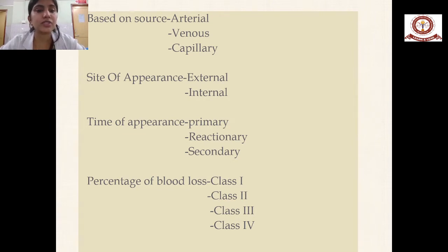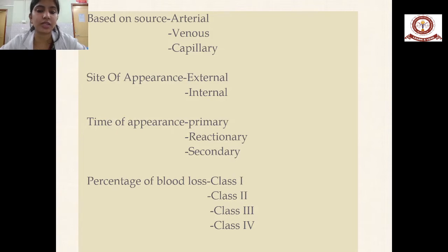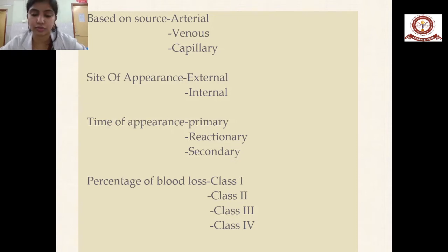Based on the site of appearance, it can be classified as internal hemorrhage and external hemorrhage. Based on the time of appearance, it can be classified as primary, reactionary, and secondary. Based on the percentage of blood loss, it can be classified as class 1, class 2, class 3, and class 4.